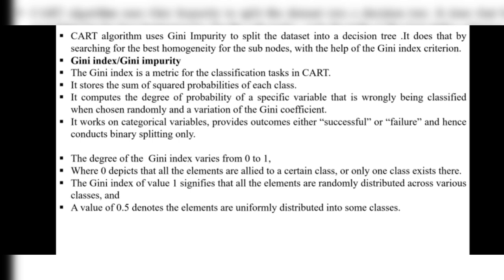The Gini index is a metric for classification tasks in CART. It stores the sum of squared probabilities of each class and computes the degree of probability of a specific variable being wrongly classified when chosen randomly. It works on categorical variables, providing binary splitting outcomes — either successful or failure. If successful, the node goes to the right side; otherwise to the left side.